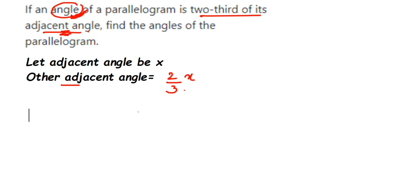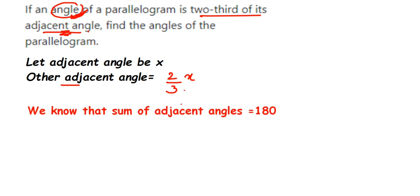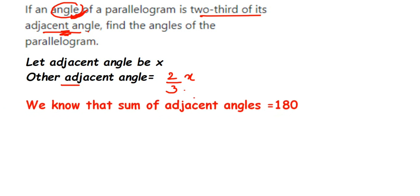As mentioned, if you add two adjacent angles, the sum is 180 degrees — this is a property of a parallelogram. Remember this property; it is really important to solve such problems. If I add these two angles, the sum has to be equal to 180 degrees, so we are going to form an equation.